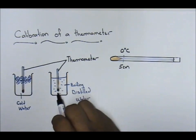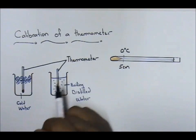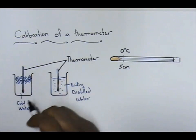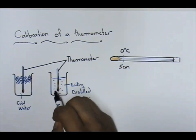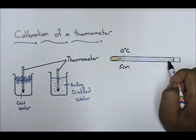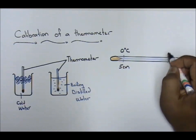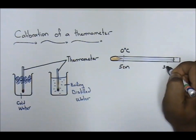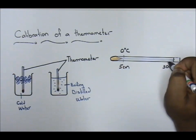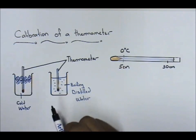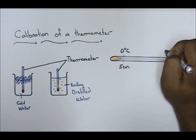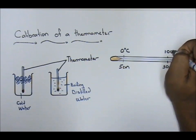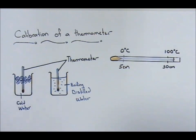Now what happens is when you take the thermometer, let it cool for a while, let it be at normal temperature, then you put it in boiling water. When you put it in boiling water, let's just say it goes up all the way until 30 centimeters.